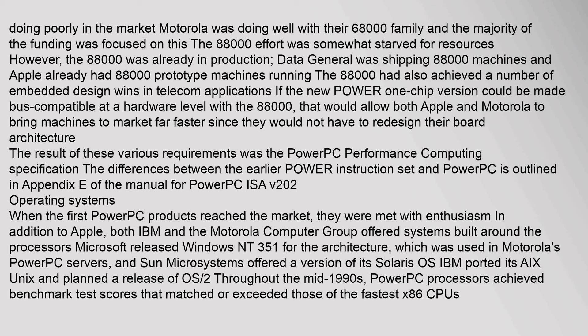When the first PowerPC products reached the market, they were met with enthusiasm. In addition to Apple, both IBM and the Motorola Computer Group offered systems built around the processors. Microsoft released Windows NT 3.51 for the architecture, which was used in Motorola's PowerPC servers, and Sun Microsystems offered a version of its Solaris OS. IBM ported its AIX Unix and planned a release of OS/2. Throughout the mid-1990s, PowerPC processors achieved benchmark test scores that matched or exceeded those of the fastest x86 CPUs.